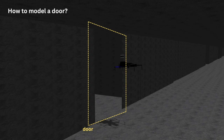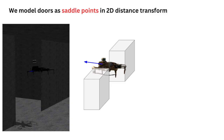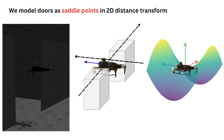How do we model doors using LiDARs? We model doors as saddle points in the distance transform map. In terms of the distance to occupied cells, a door is at its relative maximum compared to the cells on the axis of walls, and at its relative minimum compared to the cells on the perpendicular axis of free space. Thus we can model it as a saddle point.